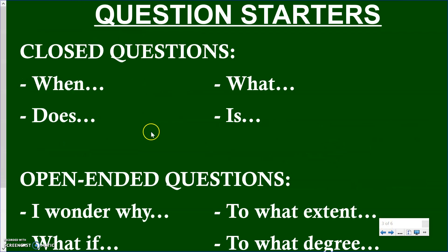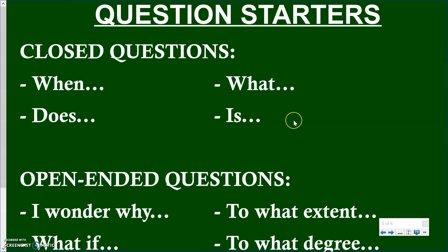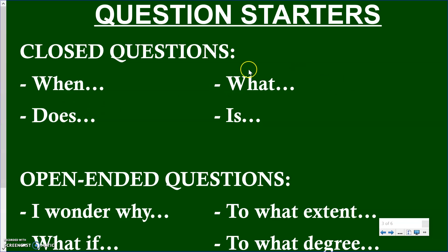Open-ended questions require more explanation. A lot of times — but not all of the time — we can tell what type of question it is based on how it starts. If a question starts with 'when,' 'does,' or 'is,' oftentimes it's a closed question with only one answer or a yes-or-no answer. 'Does the restaurant still deliver food?' — yes it does, or no it doesn't.